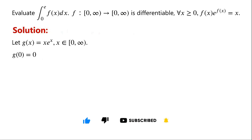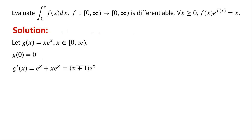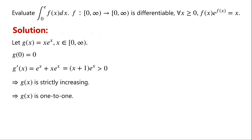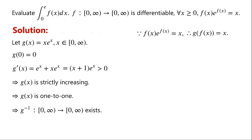Then g of 0 equals 0. The derivative g'(x) equals e to the power of x plus x times e to the power of x, which equals (x+1) times e to the power of x, which is greater than 0 for x greater than or equal to 0. So g of x is strictly increasing and therefore a one-to-one mapping, and its inverse function exists. Because f(x) times e to the power of f(x) equals x, we have g(f(x)) = x, which implies f of x equals the inverse function of g evaluated at x.